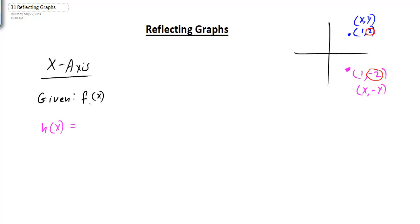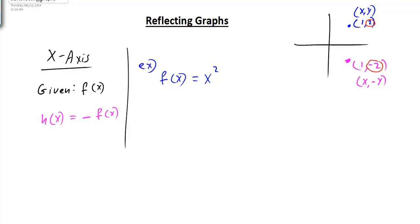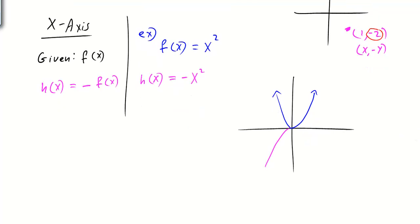Keep in mind that f(x) is really your y value. So to reflect a graph in the x-axis, we need to change the sign of our y value, and we do that by putting a negative in front of the entire function. For a specific example, f(x) = x² — the parabola opens upward at the origin — and h(x) would have a negative in front of x².